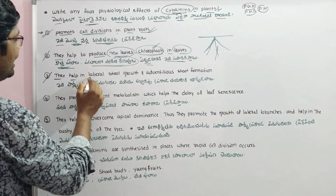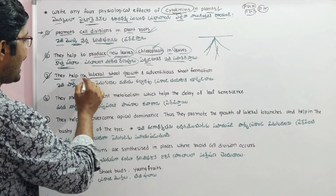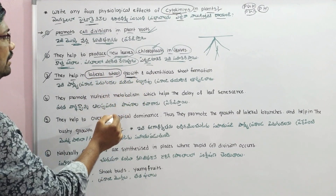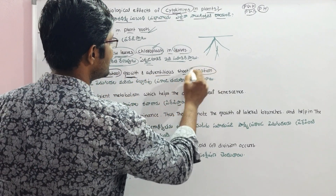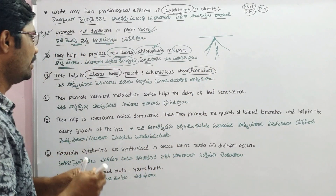The third physiological effect is that cytokinins help in lateral shoot growth and adventitious shoot formation.